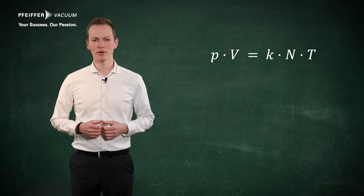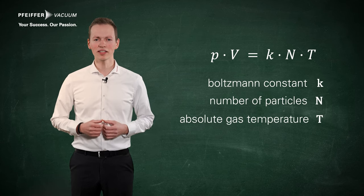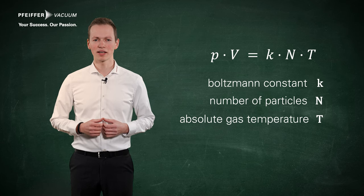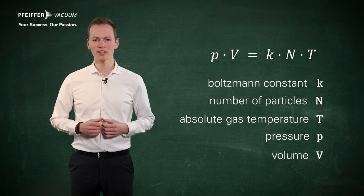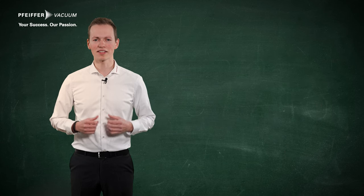Here, k describes the Boltzmann constant, N the number of particles, and T the absolute temperature of a gas. The formula can be represented in different forms, but all of them describe the state of the gas in the same way.